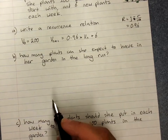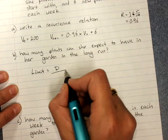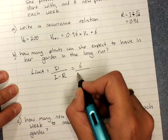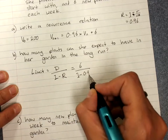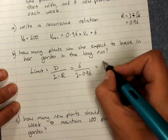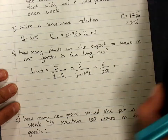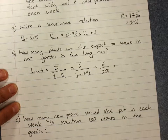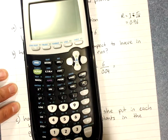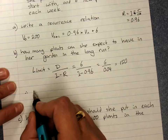Using the limit formula d over (1 minus R): the common difference d = 6, and 1 minus 0.96 = 0.04. So the limit is 6 divided by 0.04 = 150. She can expect 150 plants in the long run.